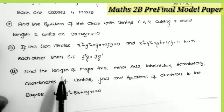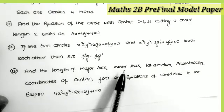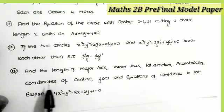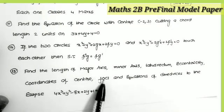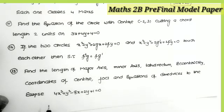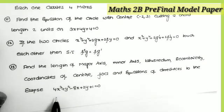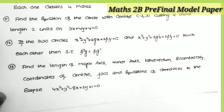The thirteenth question is a most important model from the topic ellipse: find the length of the major axis, minor axis, latus rectum, eccentricity, coordinates of the center and foci, and equations of the directrices of the ellipse 4x² + y² − 8x + 2y + 1 = 0.